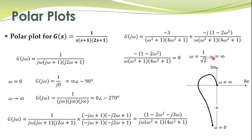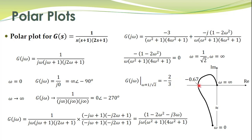The points at omega equal to zero and omega equal to infinity have already been mapped. For the crossing at omega equal to 1 over square root of 2, we substitute this frequency into the expression and get G(jω) equal to minus 2 over 3. So this crossing point is at minus 2/3 on the real axis. This completes the polar plot for this transfer function.